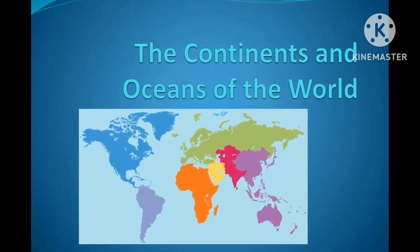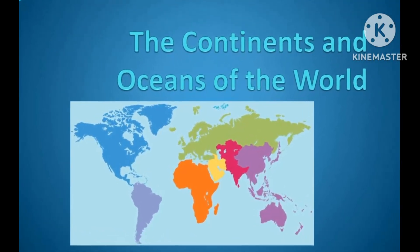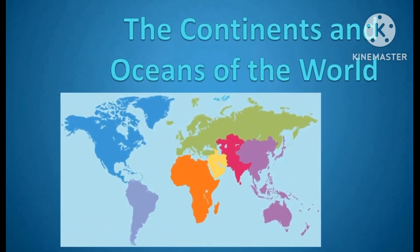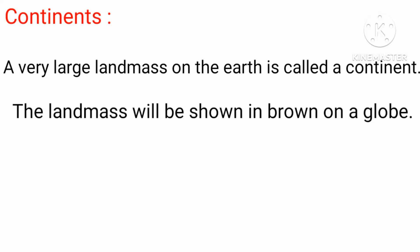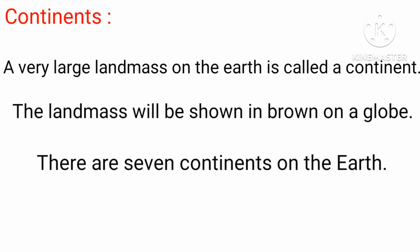The Continents and Oceans of the World. A very large landmass on the Earth is called a continent. The landmass will be shown in brown on a globe. There are seven continents on the Earth.